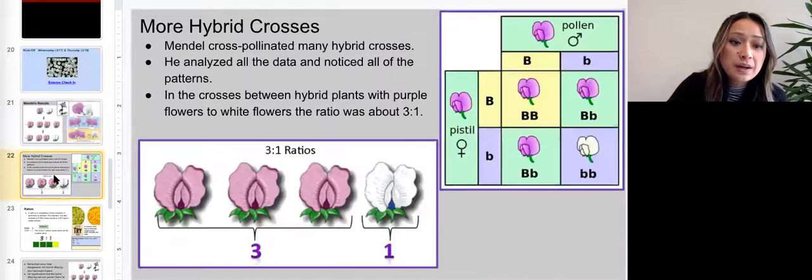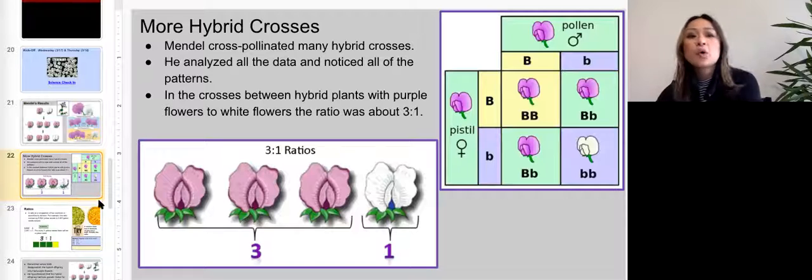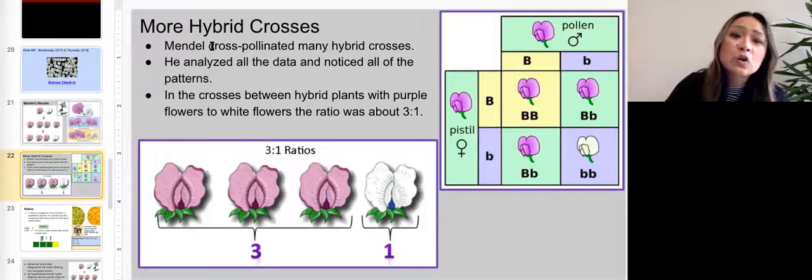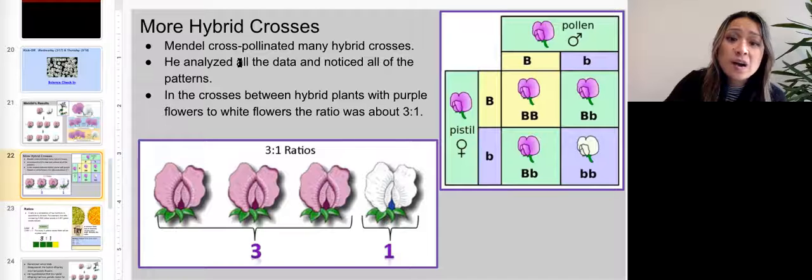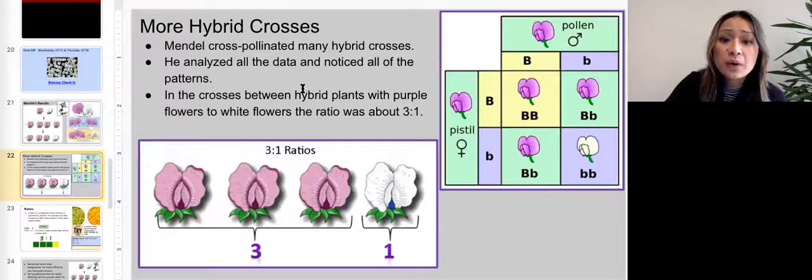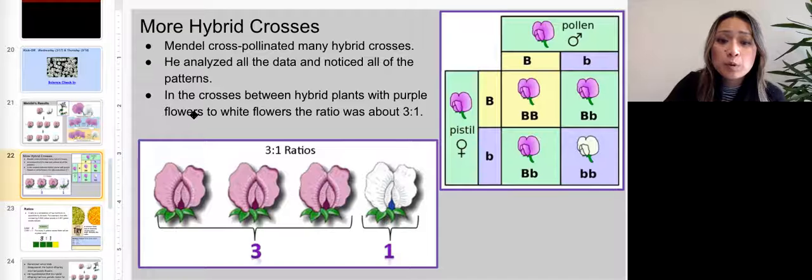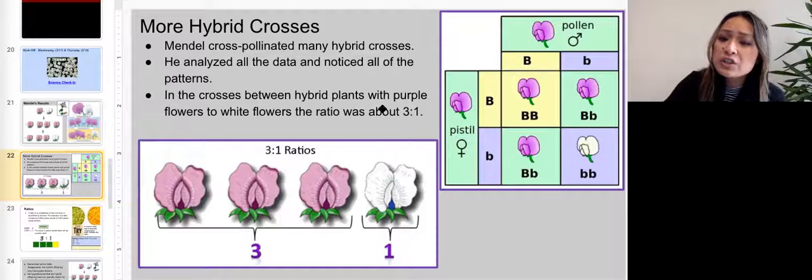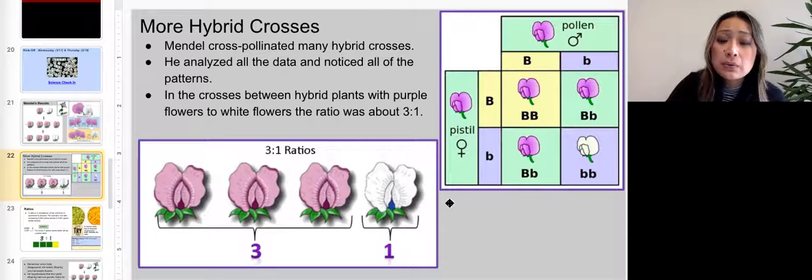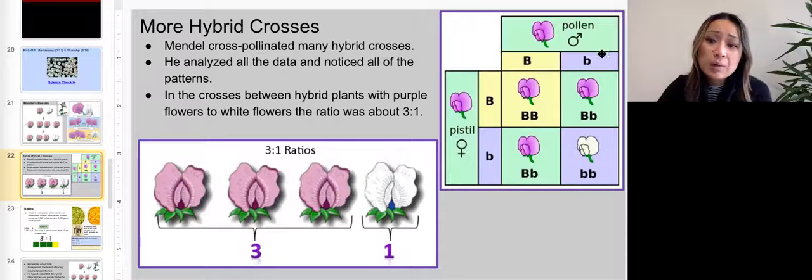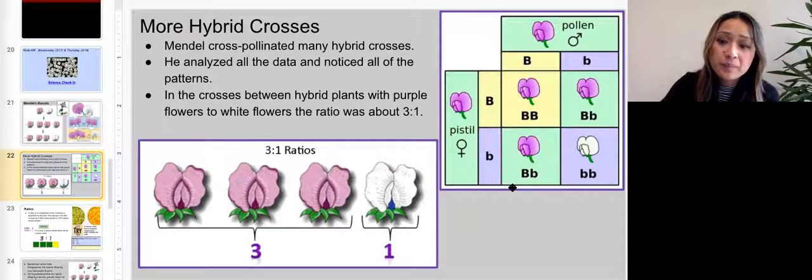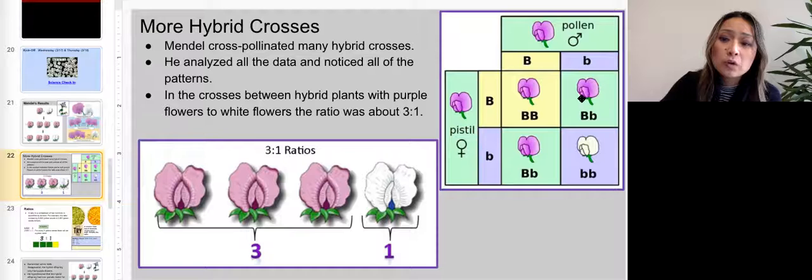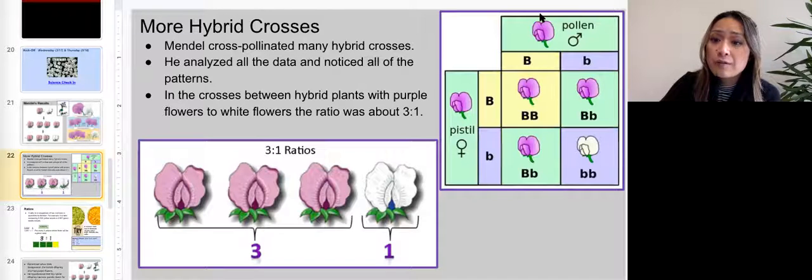So let's go to slide 22. More hybrid crosses. Mendel cross-pollinated many hybrid crosses. He analyzed all the data and noticed all of the patterns in the crosses between hybrid plants with purple flowers to white flowers. The ratio was three to one. Remember how we filled out punnett squares and there were four squares here in the middle for the offspring.